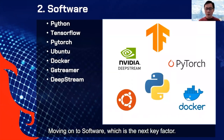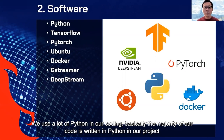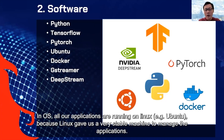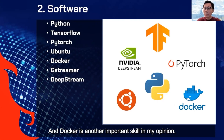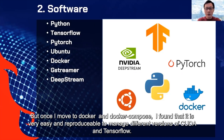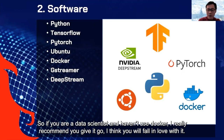Moving on to software: we use a lot of Python — the majority of our code is written in Python because it has native support for deep learning libraries like TensorFlow and PyTorch. All our applications run on Linux such as Ubuntu for stability. Docker is another important skill. In the old days, managing CUDA and TensorFlow versions with virtual environments was a real pain. Once I moved to Docker and Docker Compose, it became much easier and more reproducible to manage different CUDA and TensorFlow versions. If you're a data scientist who hasn't tried Docker, I really recommend giving it a go.